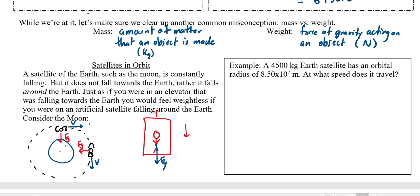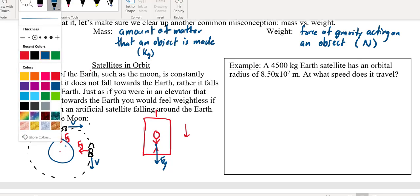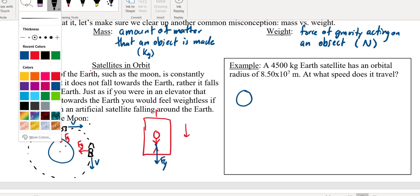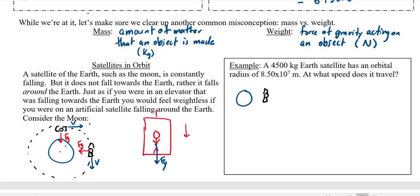So what about this: what about a 4500 kilogram Earth satellite that has an orbital radius of 8.5 times 10 to the 7 meters? What speed is it going to have to travel at? So if I have the Earth here and a little satellite out here, note that the orbital radius is the total r value from the center of the Earth. If I told you the altitude, that tells you how high up it is, but the orbital radius is this total distance here to the center of the Earth. It's literally the radius of the orbit.